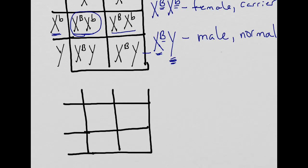Okay. So we're going to make that girl a mom. So let's put her here. She's X big B, X little b. And let's say dad has normal sight, normal color vision. He's got normal color vision. So he's X big B and Y. He's fine. Okay. How will their children be? Let's have a look.